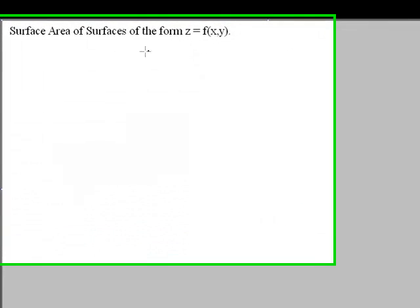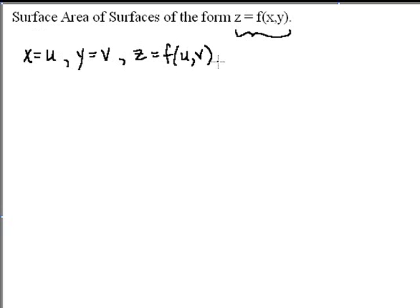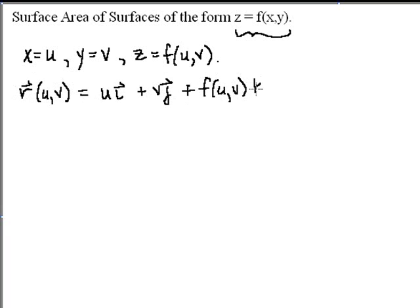Now we're going to discuss a shortcut we can use in the case where our surface is a function z equals some function of x and y. In this case, we can always parameterize our curve by letting x equal u, y equal v, and then z is just going to be the same function as before but with u and v plugged into it. In vector form, that would mean r(u,v) equals u·i plus v·j plus f(u,v)·k.